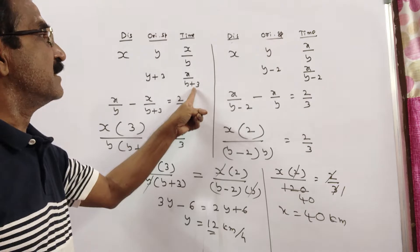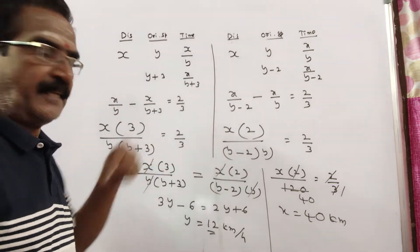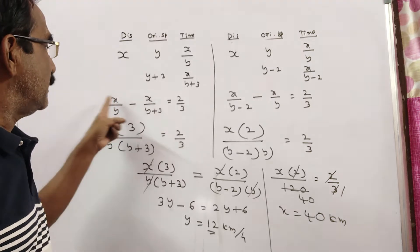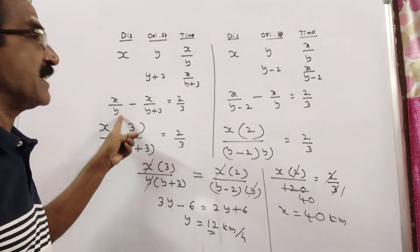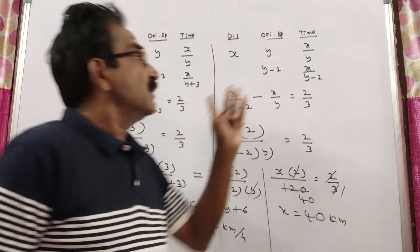So this minus this, x by y minus x by y plus 3, is equal to 2 by 3. It implies x into y plus 3 minus y, 3 by y into y plus 3, is equal to 2 by 3.